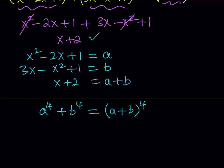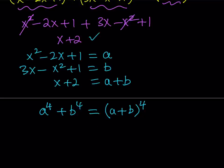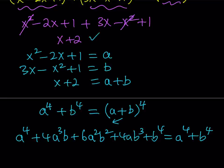We use the binomial theorem — Pascal's triangle — to expand the right-hand side. Expanding (a+b)⁴ gives: a⁴ + 4a³b + 6a²b² + 4ab³ + b⁴. The coefficients come from the binomial coefficients: 4 choose 1, 4 choose 2, 4 choose 3, and so on.